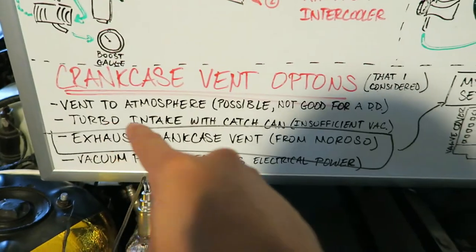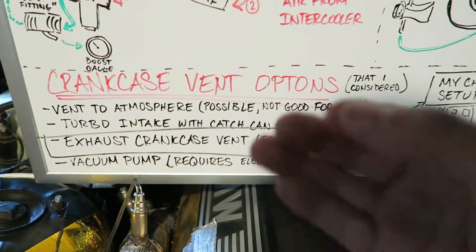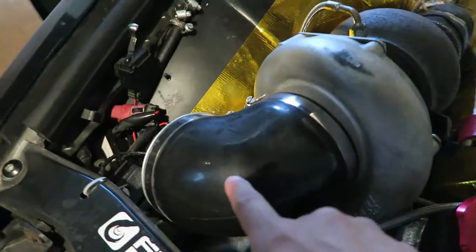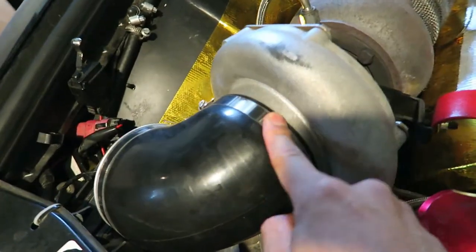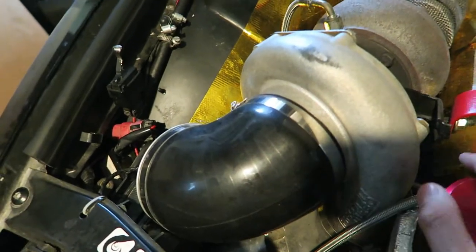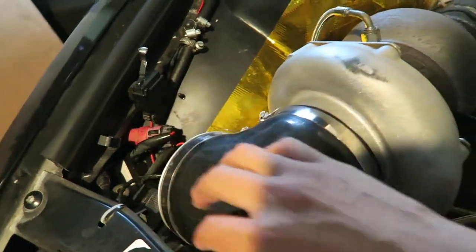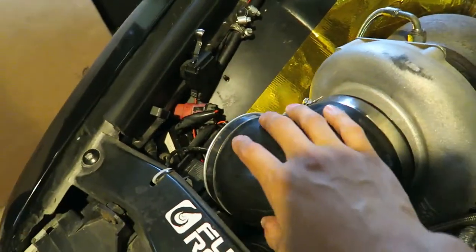Another option is to use the turbo intake with a catch can. I think it has insufficient vacuum because basically you'd be putting a filter in front of the intake side of the turbo, and depending on how fast it spools and how much it spools, you might not get enough vacuum pressure from this location itself because it is pulling a high volume of air through a fairly large opening.